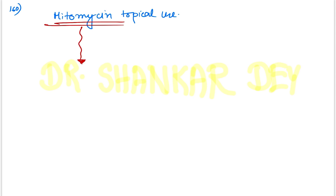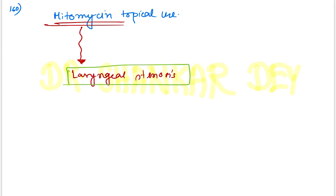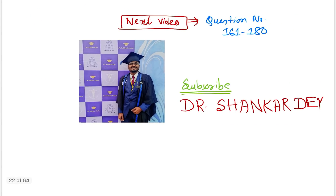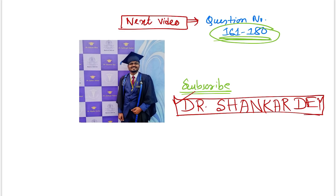Question 160: Mitomycin C topical use was asked — the answer is laryngeal stenosis or subglottic stenosis. This concludes questions 141 to 160. In the next video, we will discuss questions 161 to 180. Please subscribe to the channel, share the videos, and thank you for watching.